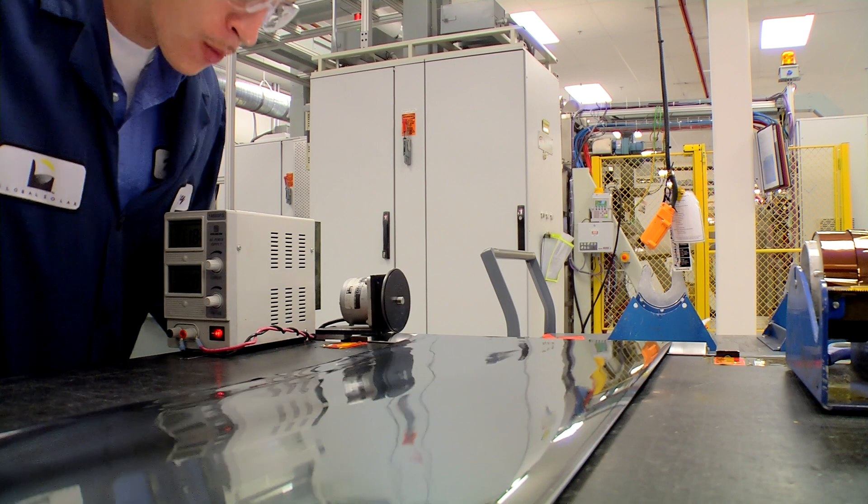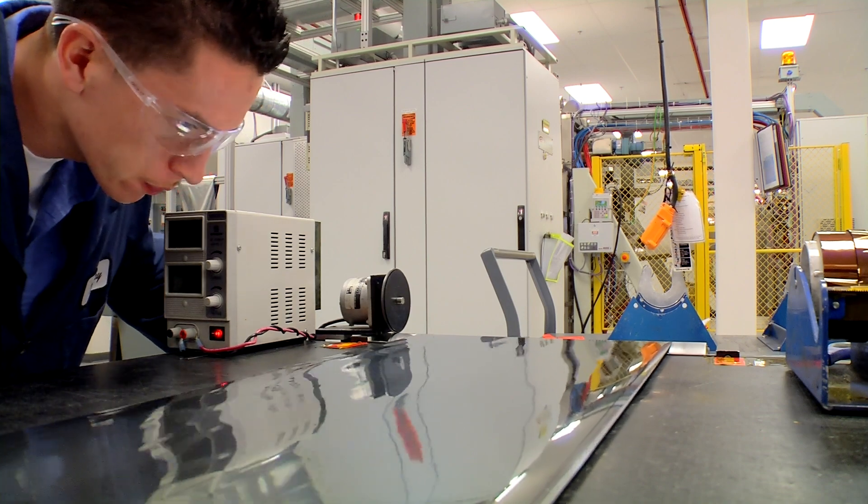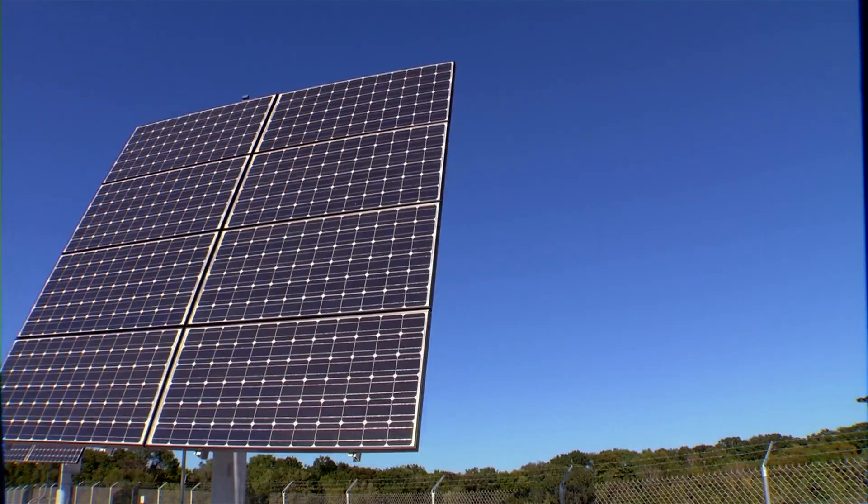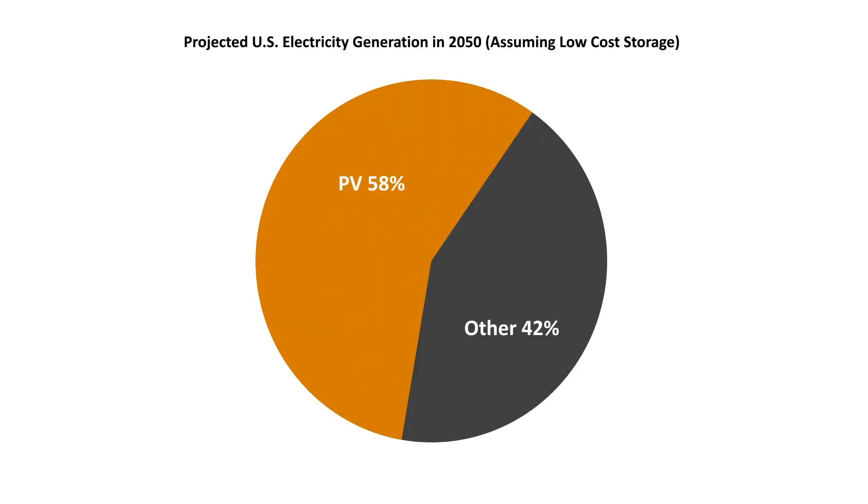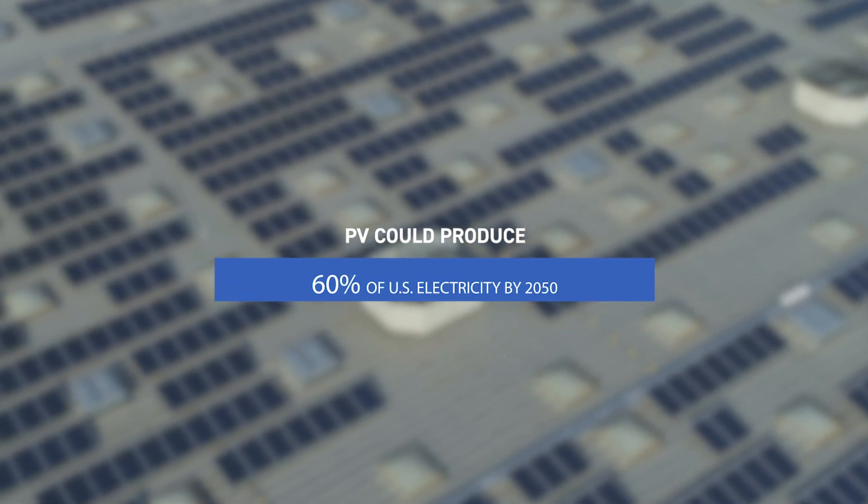Despite this progress, we're not done yet. With further research in PV, energy integration and energy storage, PV could produce 60% of U.S. electricity by 2050.